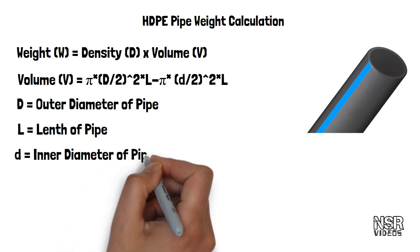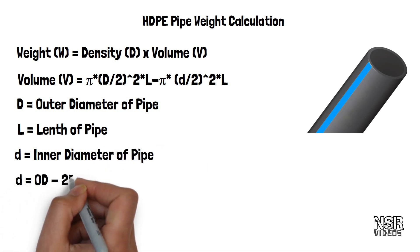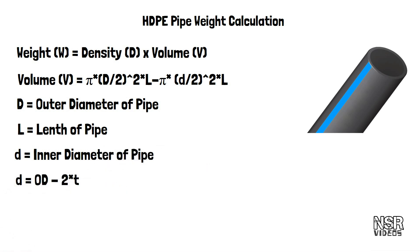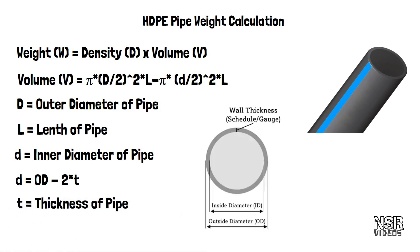We will show you the inner diameter of pipe. Small d equals to outer diameter minus 2 times of wall thickness. Wall thickness is the thickness of the pipe.